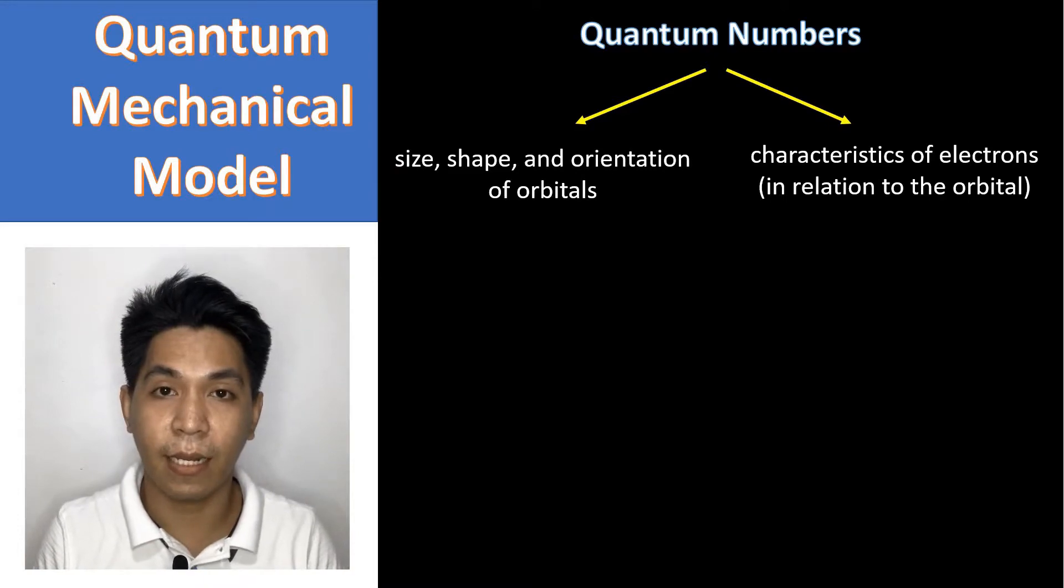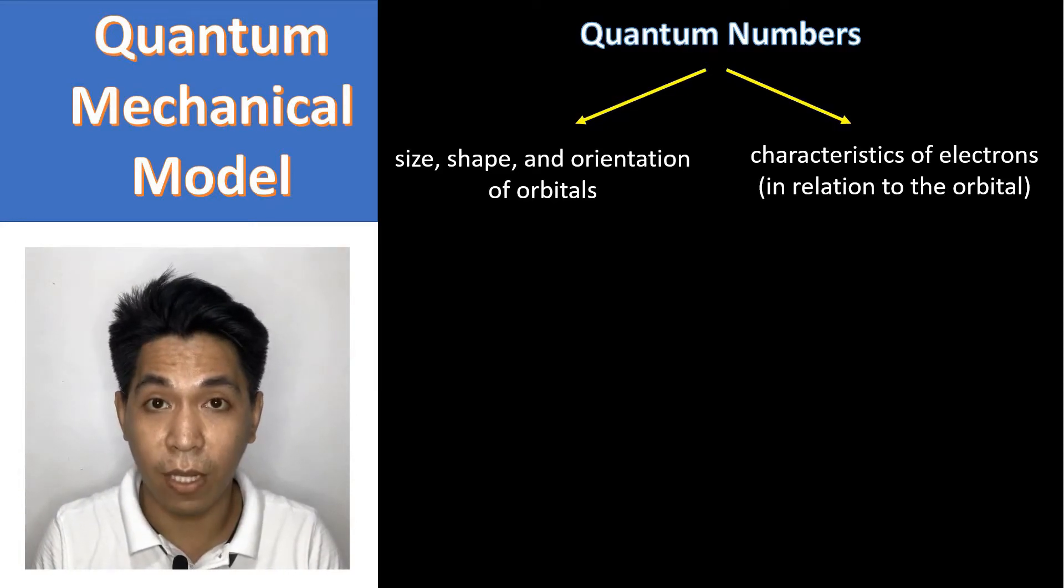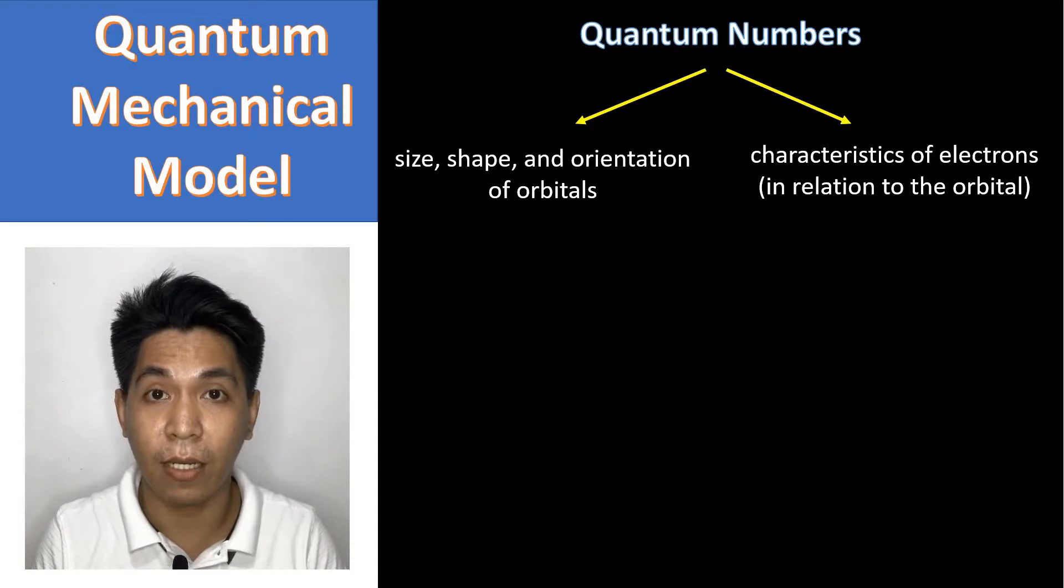The Quantum Mechanical Model uses what we call quantum numbers. What are these quantum numbers? Quantum numbers are used to determine the characteristics of the orbitals. Remember that orbitals are the places or regions where we can find electrons.